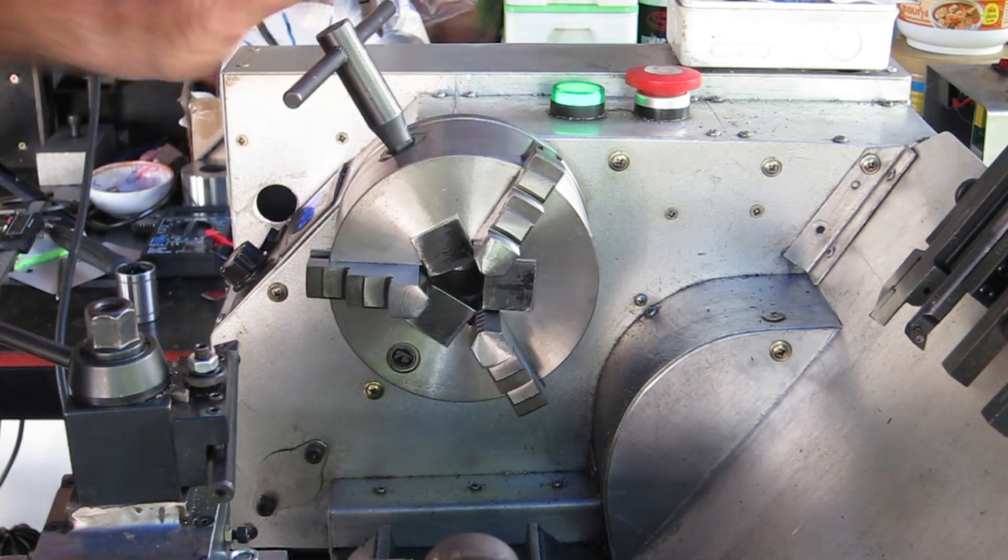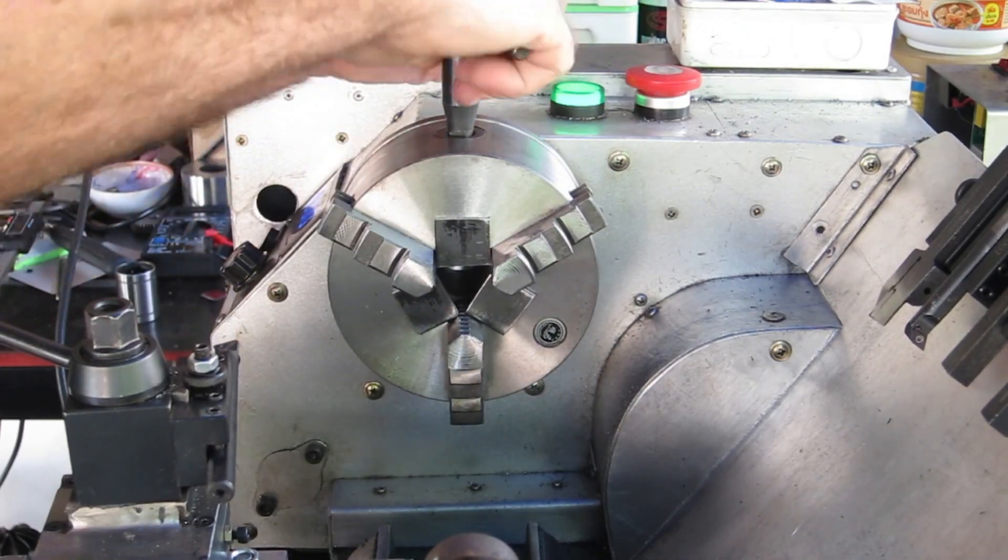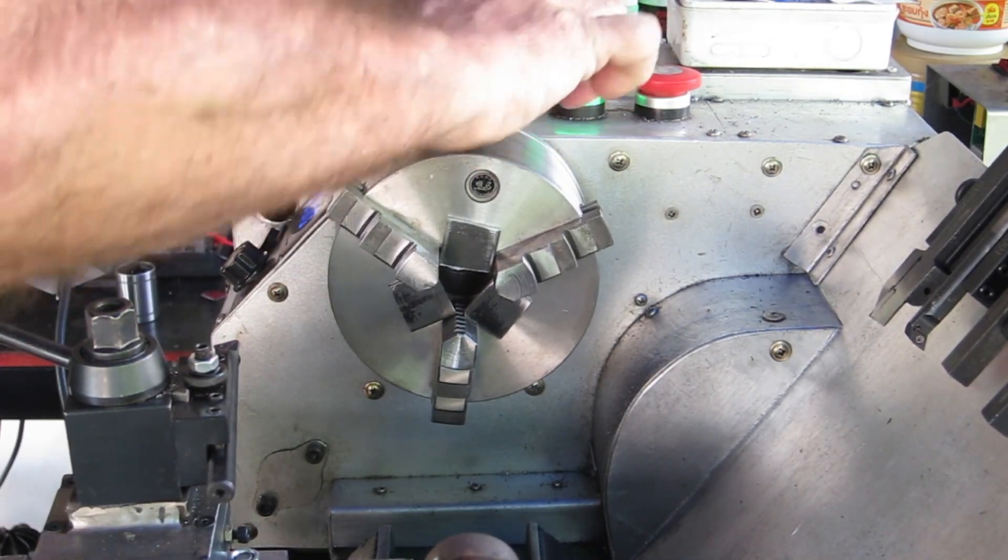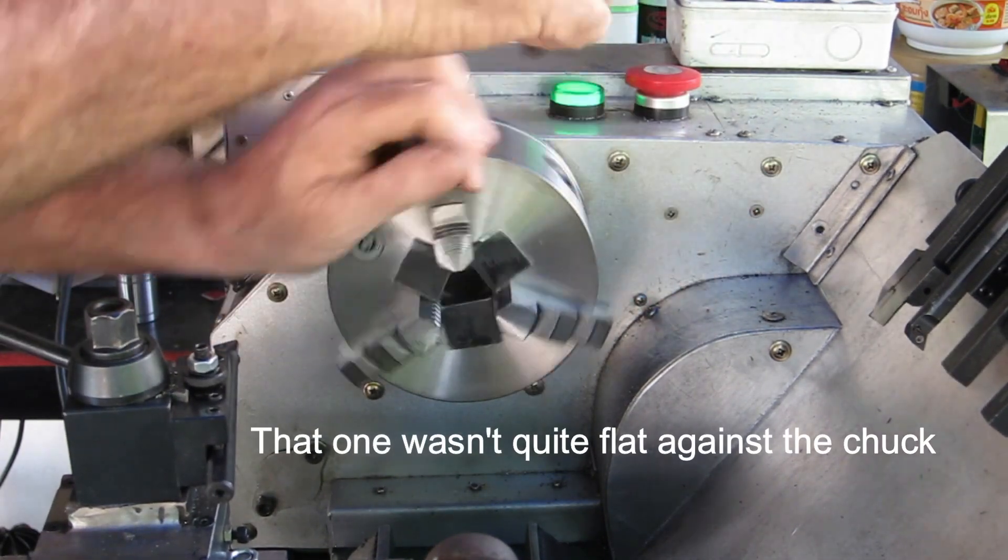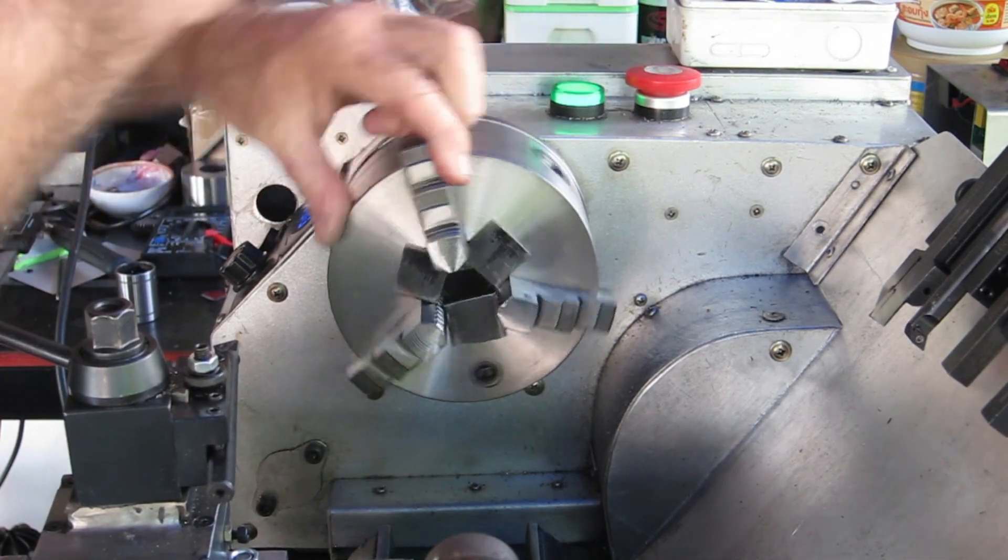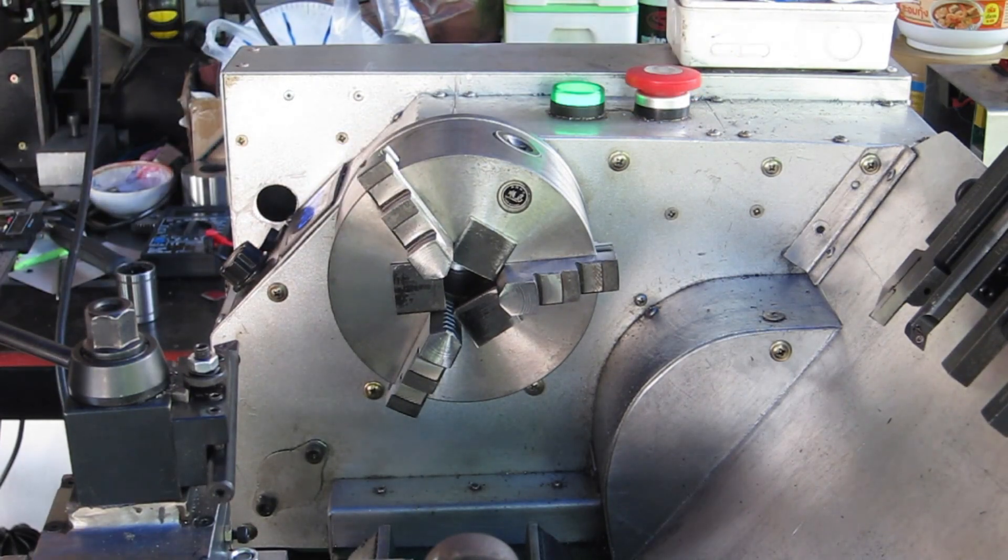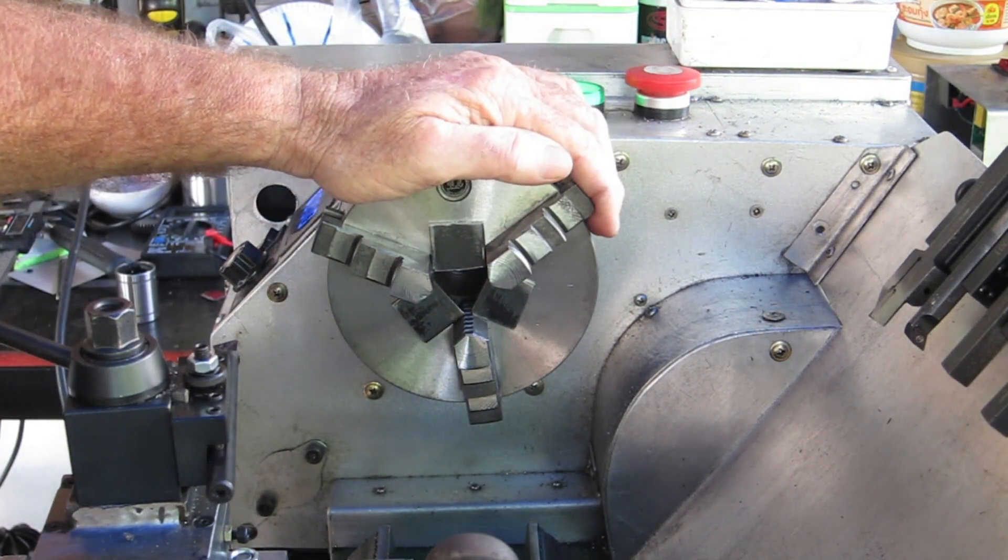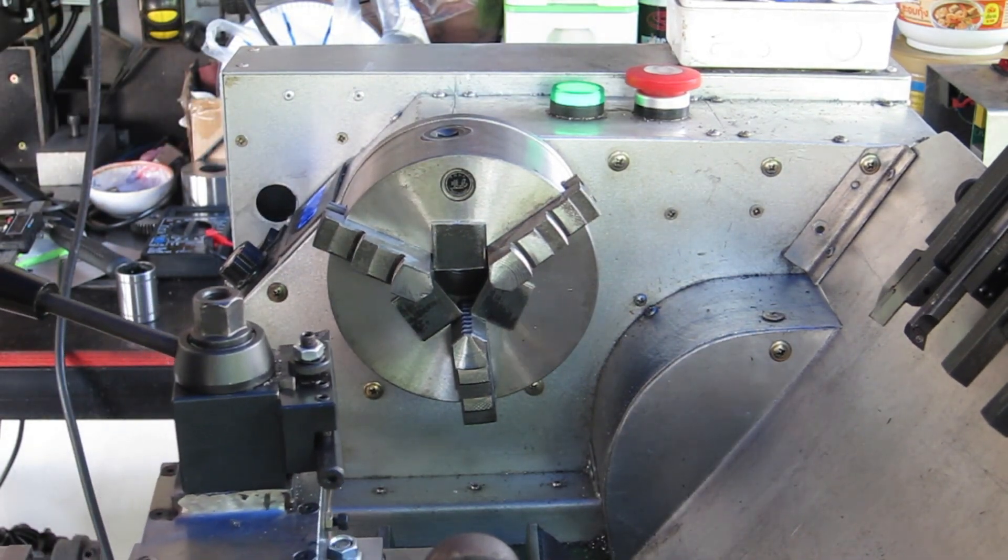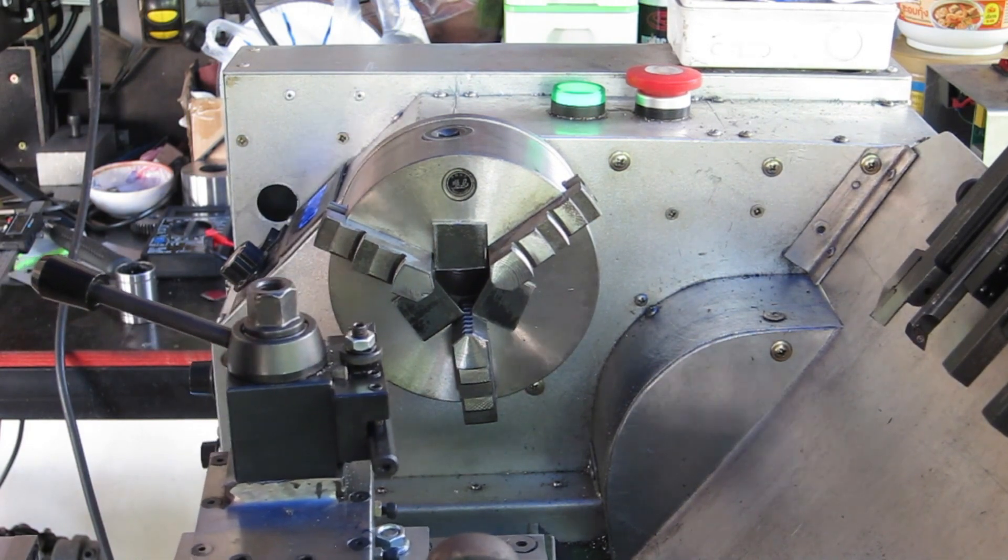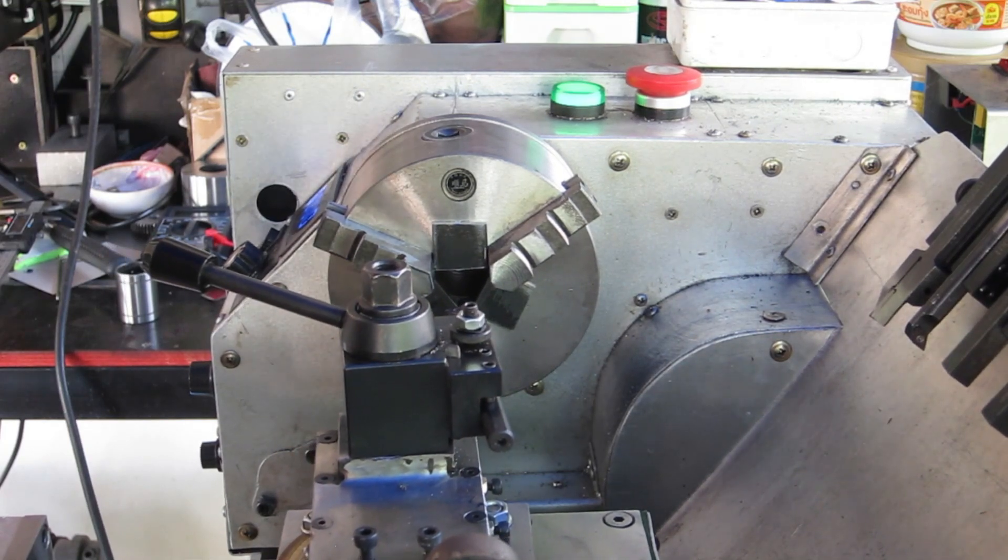Then we'll tighten the chuck down on those, make sure they're all centered. So they're all in there and centered, pinched in place. The first thing we'll need to do is bore the center out of those three bits of steel, very carefully I might add.